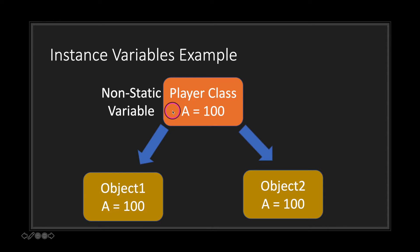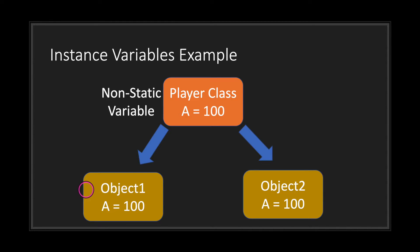Our non-static variable 'a' from our player class has the initial value of the literal integer 100. We're creating two object variables, object one and object two, and we're instantiating the player class into these objects. Each object receives the variable name and value assigned from the player class, so both object one and object two have the value 'a' equal to 100.